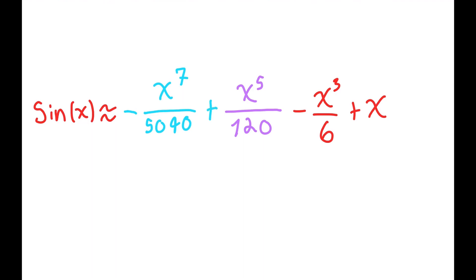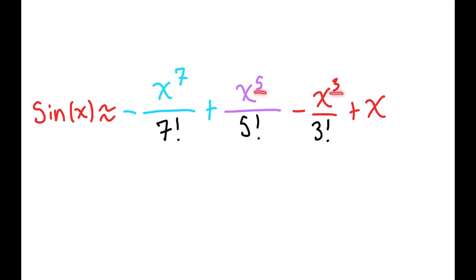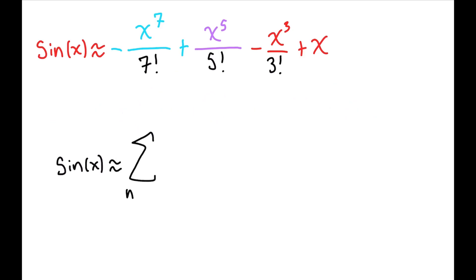It turns out there's a pattern here. Let's rewrite these denominators. It turns out that they are just factorials of the exponents. The exponents are odd, and the signs of the terms alternate. There's a way of writing this using series notation. Here it is.